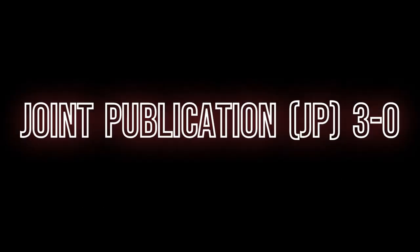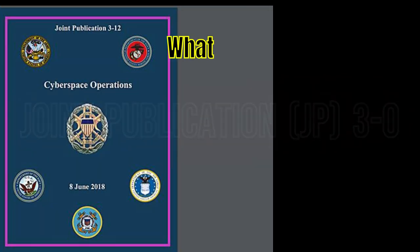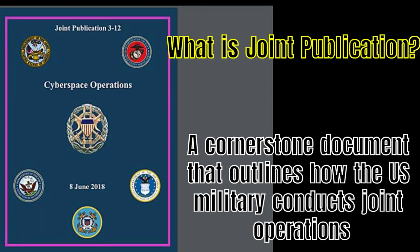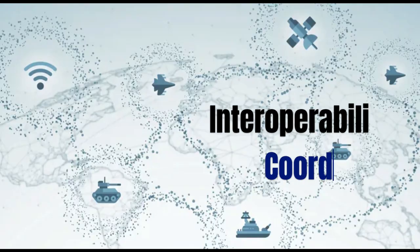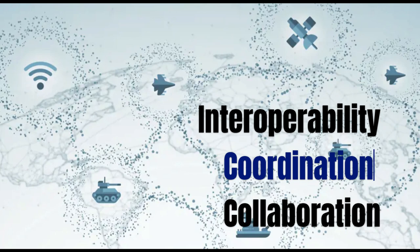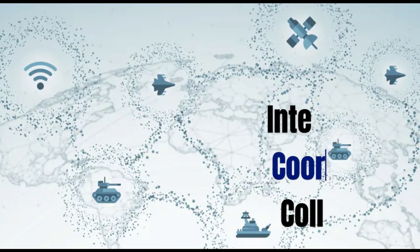Joint Publication is a cornerstone document that outlines how the U.S. military conducts joint operations, integrating forces from different services to achieve a common objective. It emphasizes the importance of interoperability, coordination, and collaboration among the Army, Navy, Air Force, and Marine Corps.